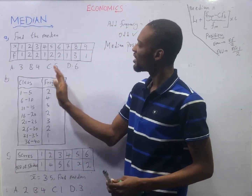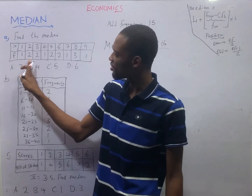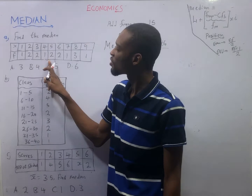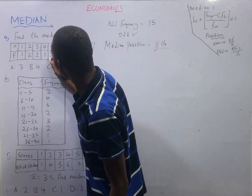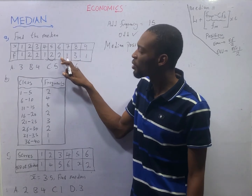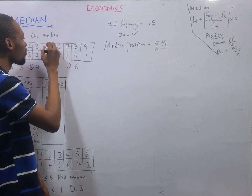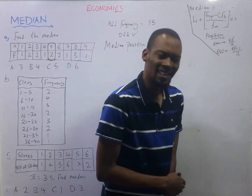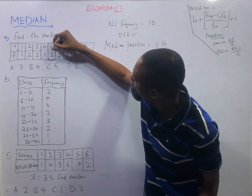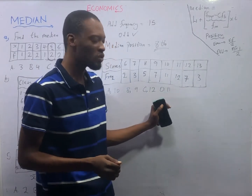After getting the eighth position, you come and look which of them is the eighth position. Start counting from the frequency: one plus two is three, three plus two is five, five plus one is six, six plus two is eight. The eighth number is here. Counting from the other side: one plus three is four, four plus one is five, five plus two is seven, seven plus two is nine - so from either direction, this is the median position. The median is the score that corresponds to this frequency. So median equals five.